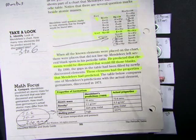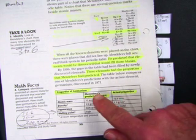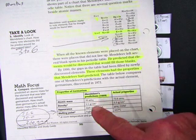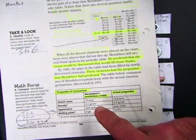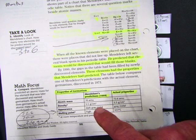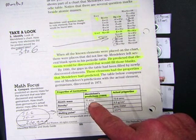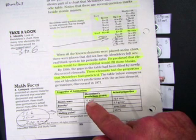But what Mendeleev did is he said, you know what, I bet, according to my pattern, I'm going to make a prediction from the element before and after. And I bet that this element probably has an atomic mass of 70.